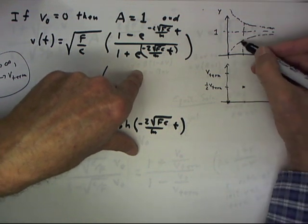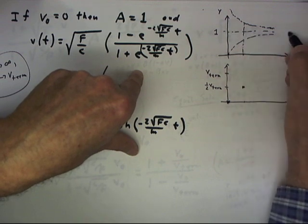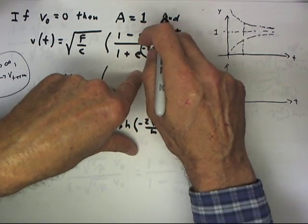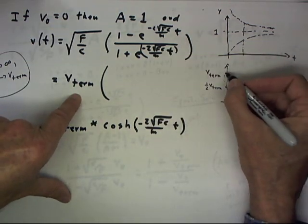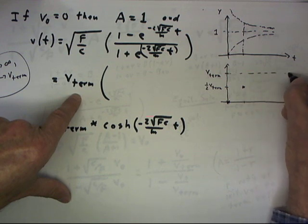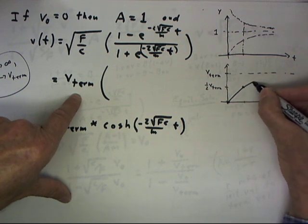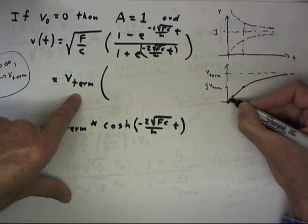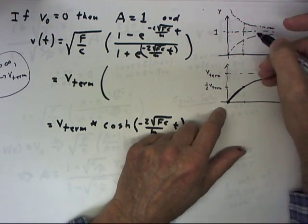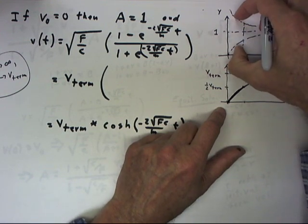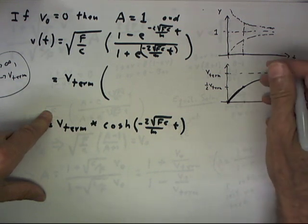As t approaches infinity, both graphs approach the same value, so this expression approaches 1 and velocity approaches the terminal velocity. The terminal velocity is a horizontal asymptote. The velocity starts at 0, passes through the intermediate point, and approaches the terminal velocity as an asymptote. We could evaluate this ratio for many values of t to get an even better picture of the graph.